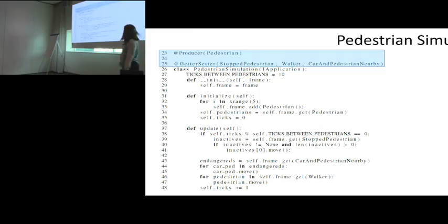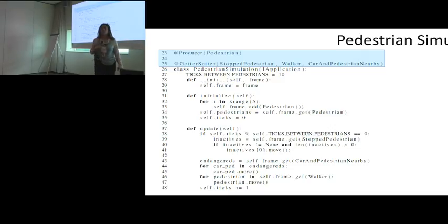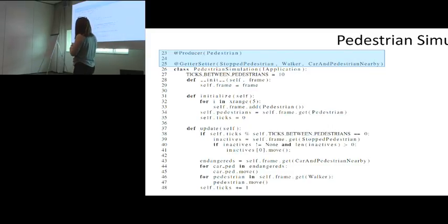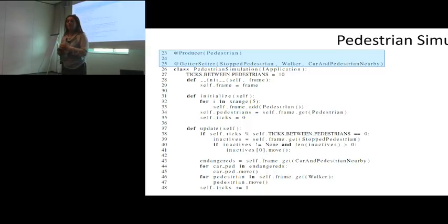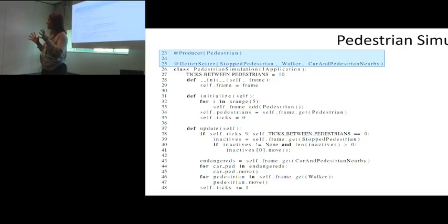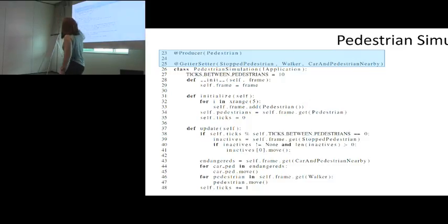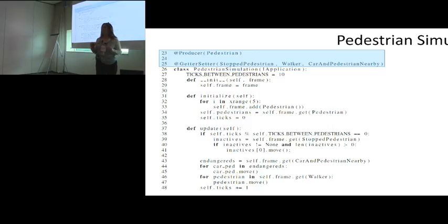Here's another component: a pedestrian simulation that declares it's a producer of pedestrians and a getter-setter of stopped pedestrians, walker, and an interesting type called car-and-pedestrian-nearby — you can already imagine what this means: these things are on the verge of collision.